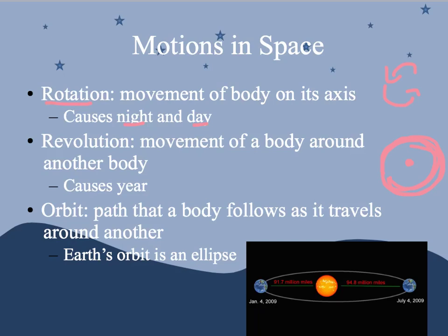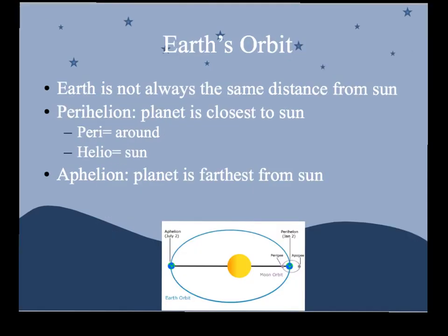A fact about our orbit: we are not always the same distance from the sun. When a planet is closest to the sun, that's called perihelion — 'peri' means around, 'helio' means sun. Aphelion is when it's furthest away from the sun. We're closest in January and furthest in July.